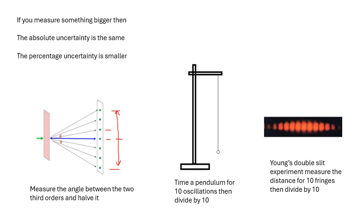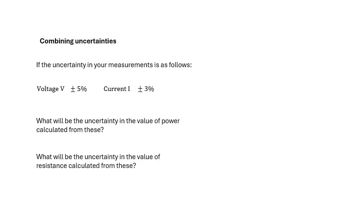If you're timing the period of a pendulum - I'll talk more about pendulums later - you do it for 10 oscillations and then divide by 10. In Young's double slit experiment, and these are what we call fringes, you measure the distance between 10 fringes and divide by 10. Yeah, measure something bigger and the percentage uncertainty is smaller.